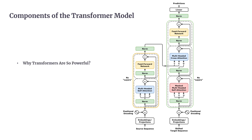Why have transformers become so popular? Here are a few key reasons. First, parallel processing: unlike RNNs, which process data one step at a time, transformers can process the entire sequence at once, making training much faster. Second, long-range dependencies: with self-attention, transformers can capture relationships between tokens that are far apart — something RNNs struggle with due to issues like vanishing gradients. Third, scalability: transformers are highly scalable; you can add more layers and parameters to improve performance, making them suitable for complex tasks.